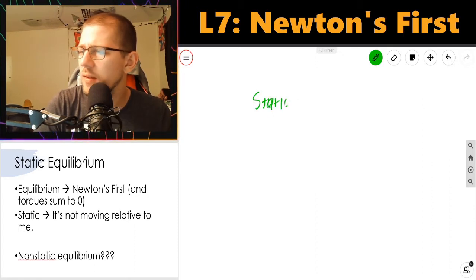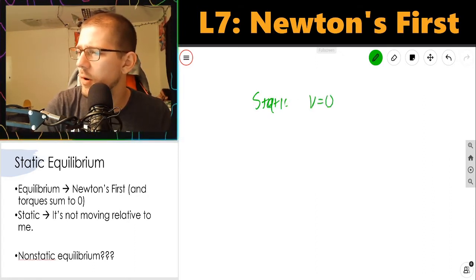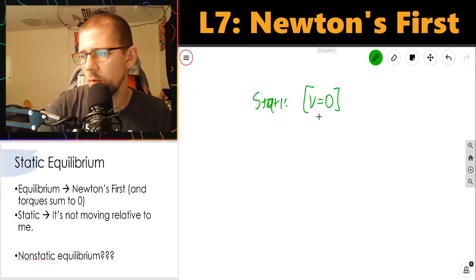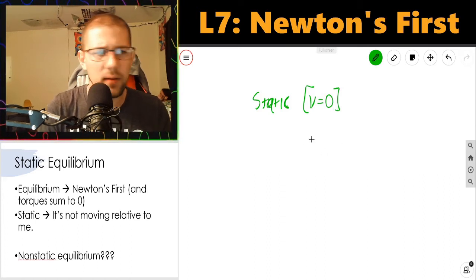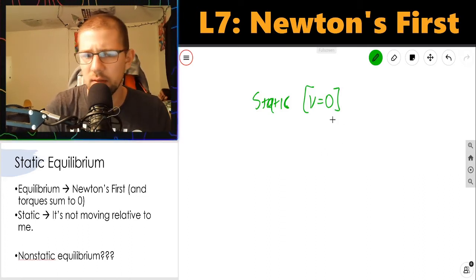Static, we usually take to mean velocity equals zero. Sometimes people play with this definition a little bit, so I'd say this is kind of a softer definition. Usually when I say static, I mean it's not moving relative to me, or its velocity relative to me is zero.